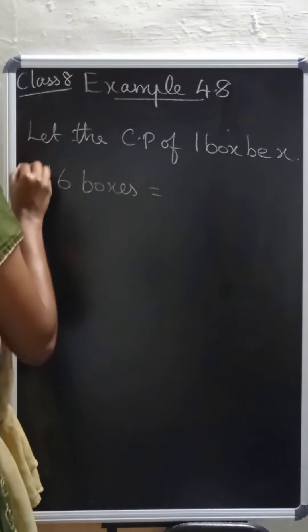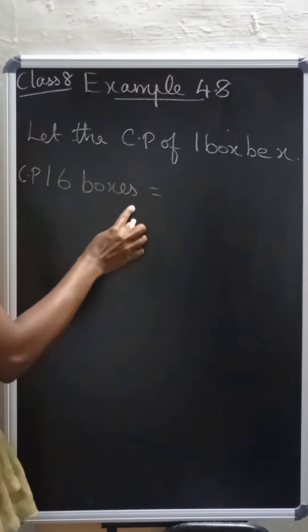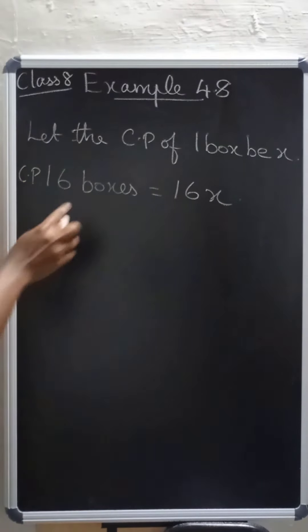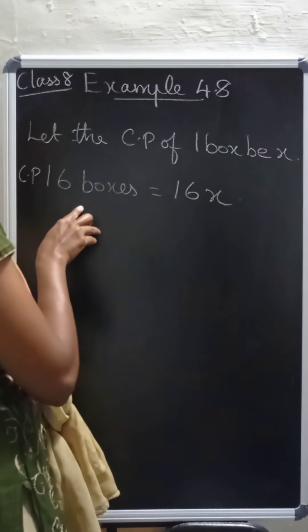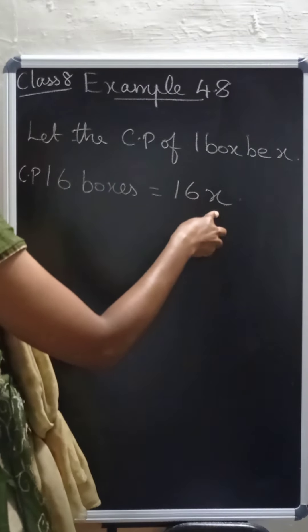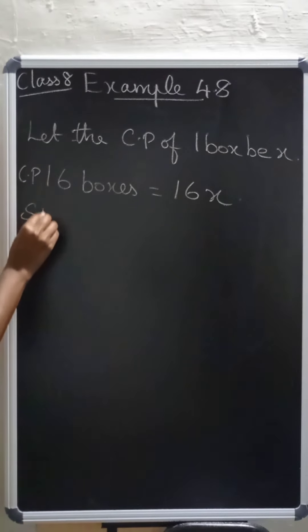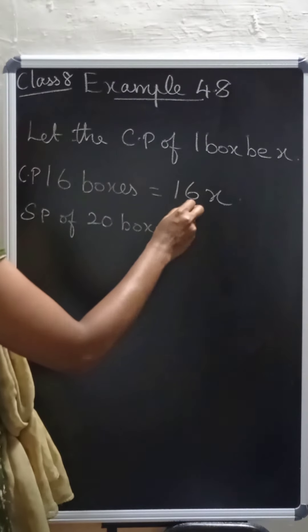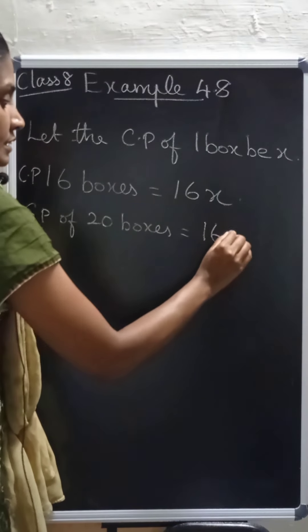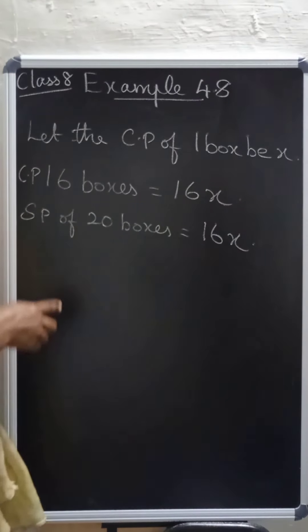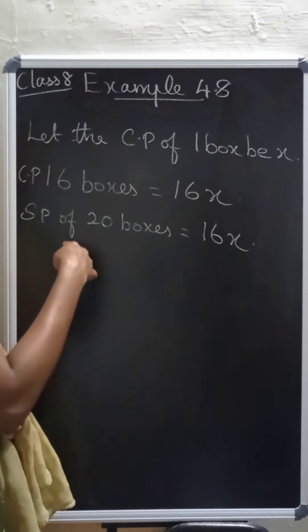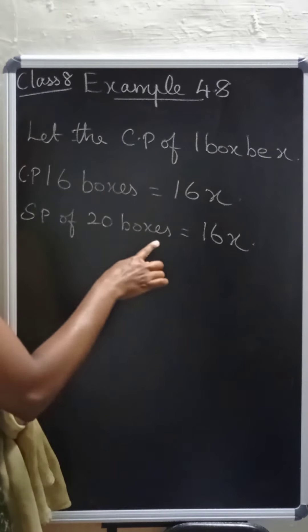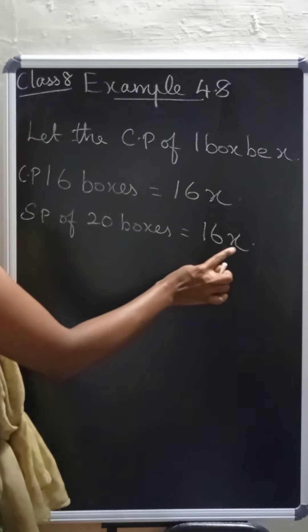The cost price of 16 boxes is equal to 16x. That is, 1 box costs x, and 16 boxes gives us 16x. Now the selling price of 20 boxes: since cost price of 16 boxes equals selling price of 20 boxes, the selling price of 20 boxes is also 16x.